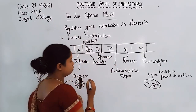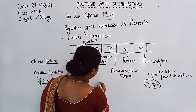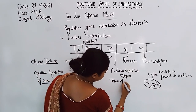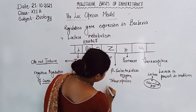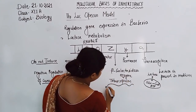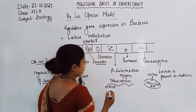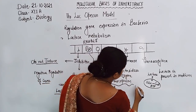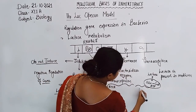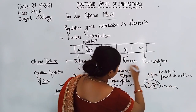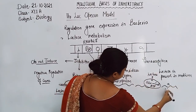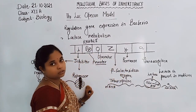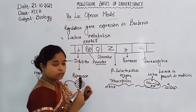RNA polymerase binds with the promoter region and induces mRNA synthesis — transcription takes place. Through transcription, mRNA gets synthesized, which has the Z gene coding for beta-galactosidase. The Y gene also transcribes, which has the code for permease, and the A gene transcribes, which has the code for transacetylase.